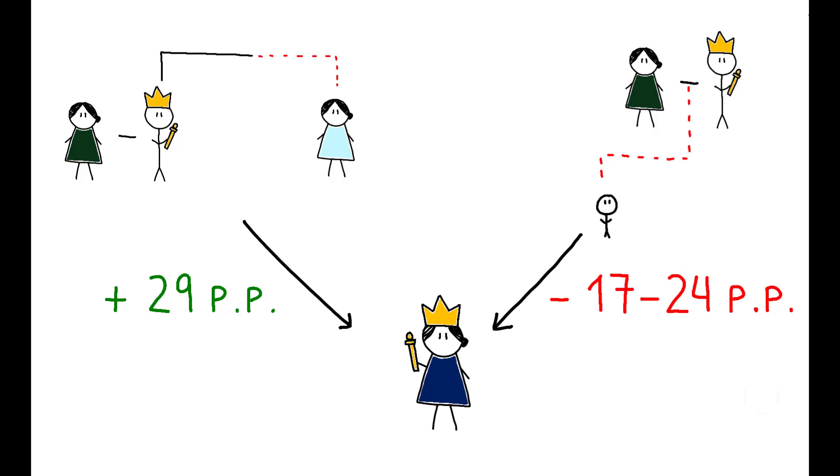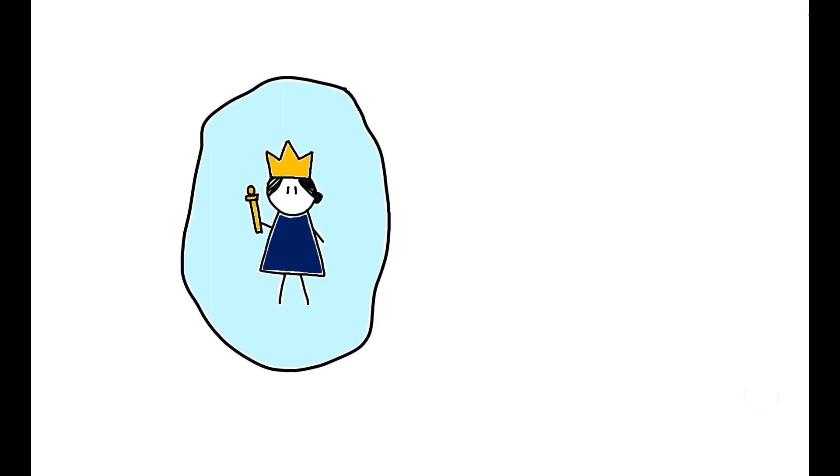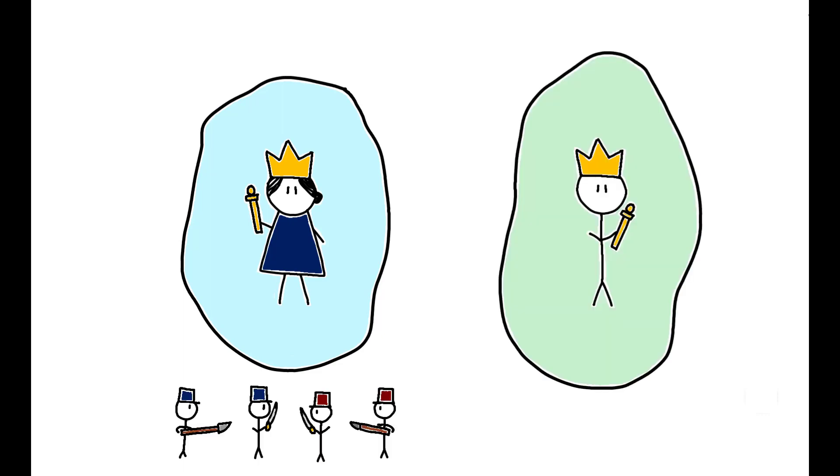Thus, to estimate the causal effect of female rule on external conflict, the authors leverage cases where queens ascended to the throne as a result of these arbitrary factors. And, contrary to the conventional wisdom, they find that polities led by queens were actually more prone to conflict than polities led by kings.